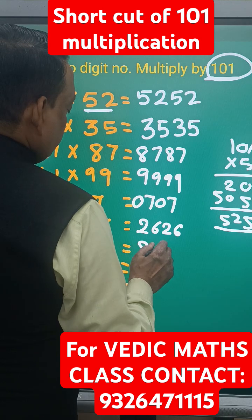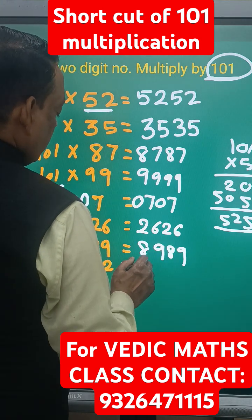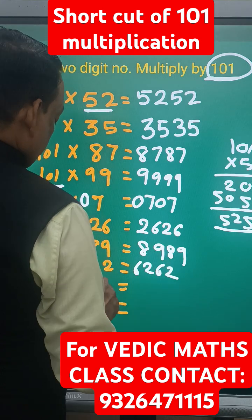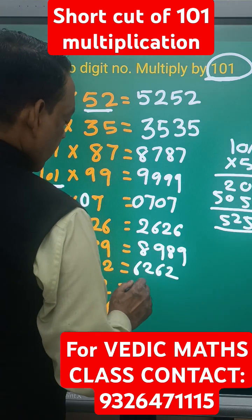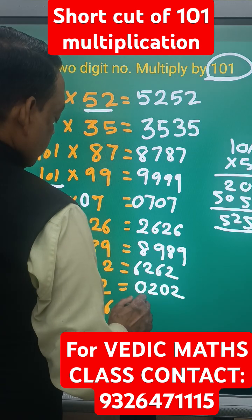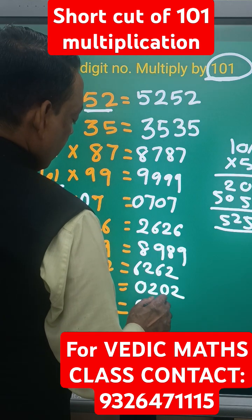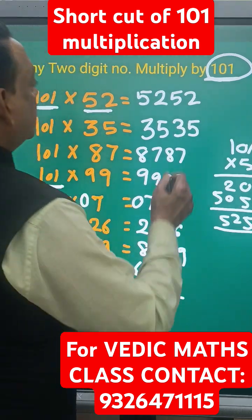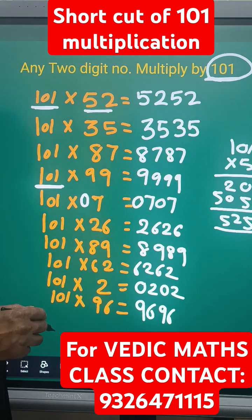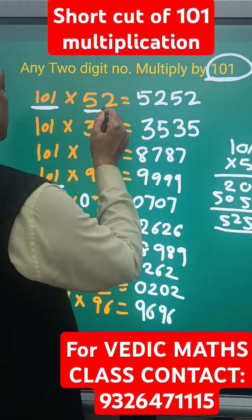More examples: 89 gives 8989, 62 gives 6262, and for 2 — again a single digit — it becomes 0202, which is 202. And 96 gives 9696. So this is the rule for any two-digit number multiplied by 101.